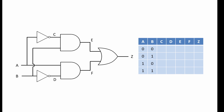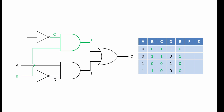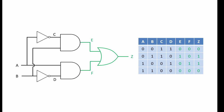Starting with C: C is simply NOT A. Then D is simply NOT B. Now that we have C and D, we can consider E — E is B AND C. F is A AND D. And finally, Z is E OR F. Here is our truth table.